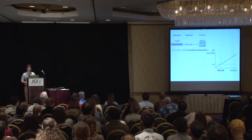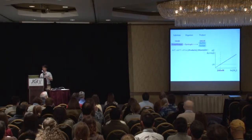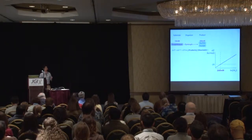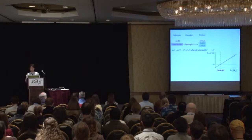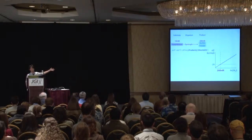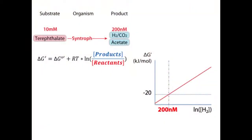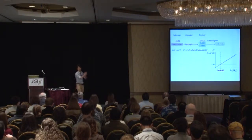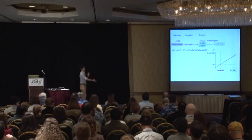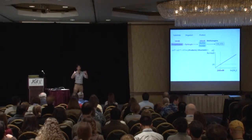In the case of terephthalate at 10 millimolar concentration, byproduct hydrogen needs to be at 200 nanomolar — that's a five orders of magnitude difference. You can't achieve this by yourself: if you degrade a little terephthalate, you generate sufficient hydrogen to inhibit your own metabolism. So syntrophs make obligate interactions with methanogens, who take hydrogen and acetate down to low enough concentrations and convert it to methane. This interaction is called syntrophy, where a syntrophist passes substrates to methanogens, which in turn create a thermodynamically favorable environment.